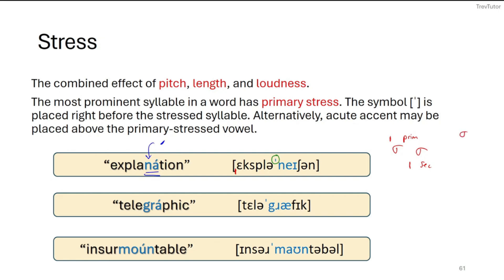Now, in the case of telegraphic, we can hear primary stress on graph, telegraphic. And in insurmountable, we can hear primary stress on mount. Insurmountable. Insurmountable. It's not insurmountable. It's not insurmountable. It's not insurmountable. And it's definitely not insurmountable. So primary stress is on mount there. And again, we can see in both of these transcriptions that we have our primary stress right before that syllable.